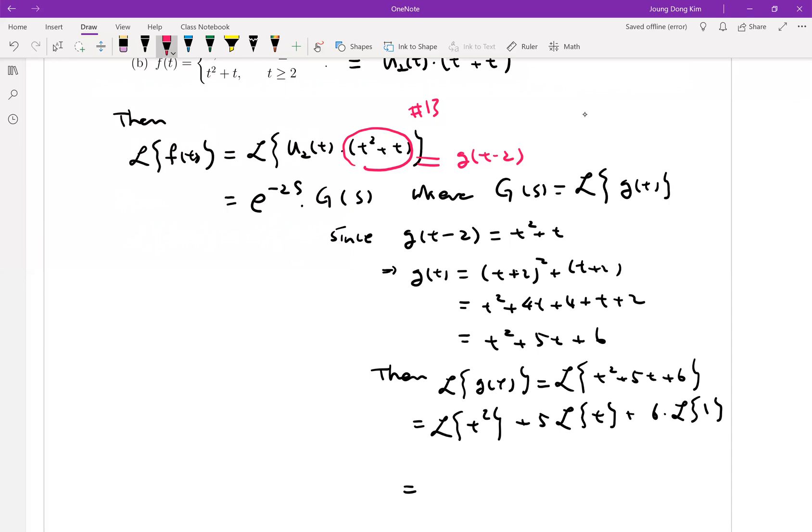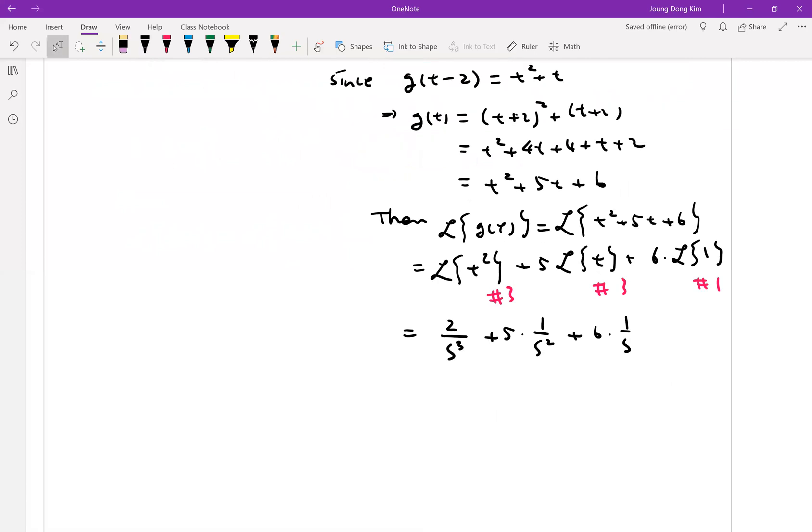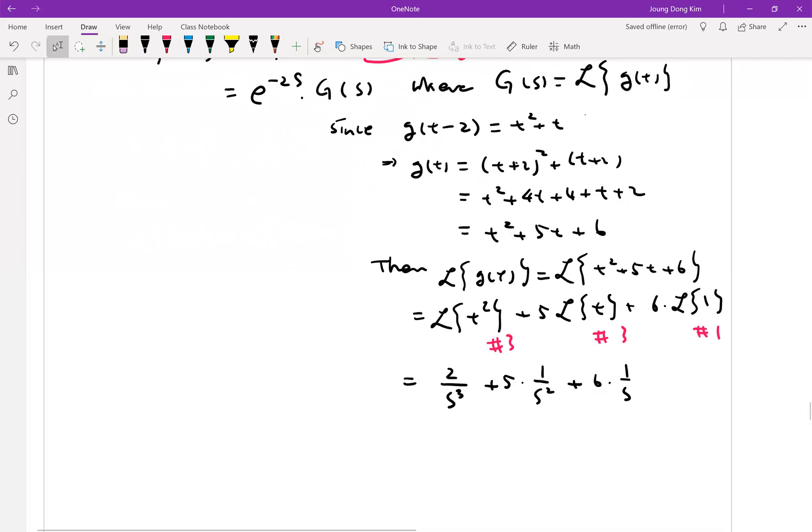As you talked about, this is number 3 and this is number 3 as well, and this is number 1. So that is 2 over s cubed plus 5 times 1 over s squared plus 6 times 1 over s. This is your g of s.